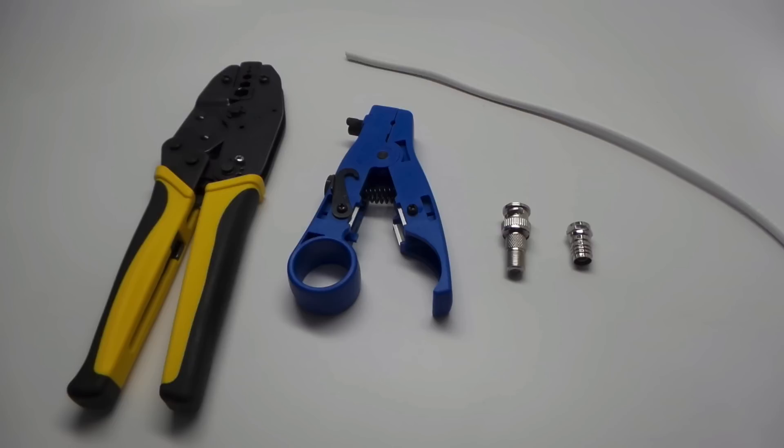In this video, I'll show you how to attach a crimp-on type F connector to RG-59 coax cable. Please note that the process is exactly the same to attach crimp-on F connectors to RG-6 coax cable. I'll also attach a BNC screw-on connector to the F connector for use in CCTV camera installations.